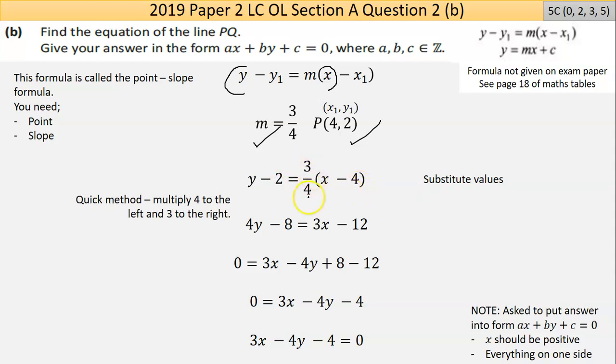Now they want the answer not like this, they want everything on one side with x being positive. So let's do a bit of simplification here. One quick method here that people use is they learn off that this works: you multiply the 4 this way and the 3 this way. It's the same thing as multiplying both these terms by 3/4 and then multiplying across by 4, so it just works faster. There are varied ways of simplifying a statement like this. So 4y - 8 = 3x - 12.